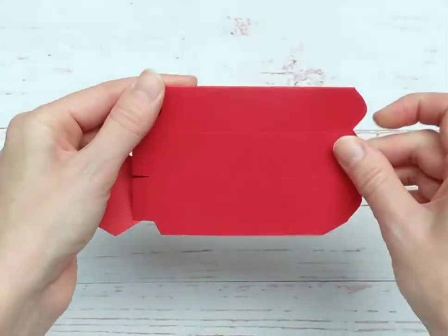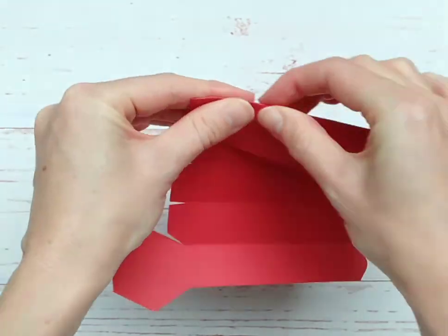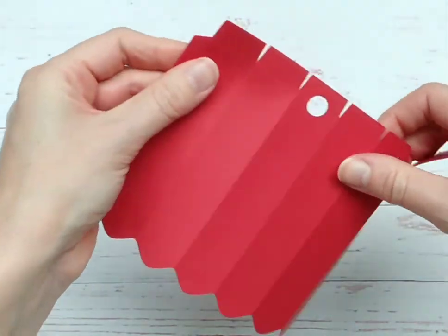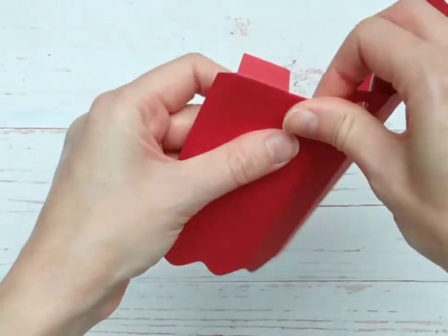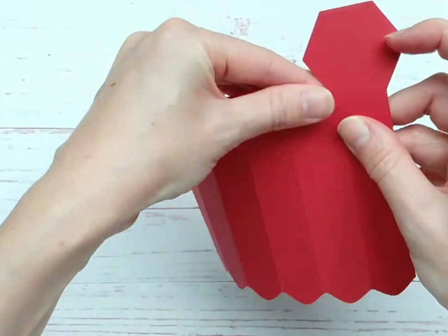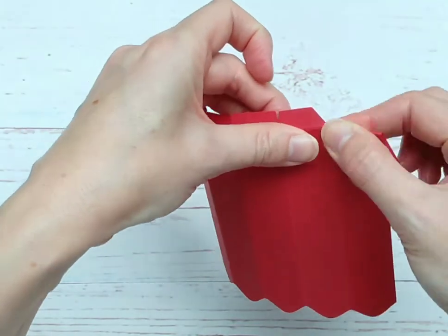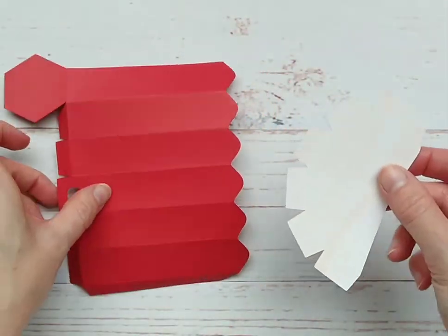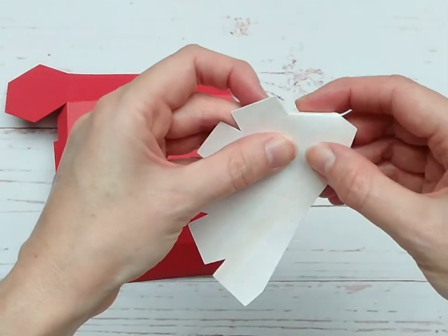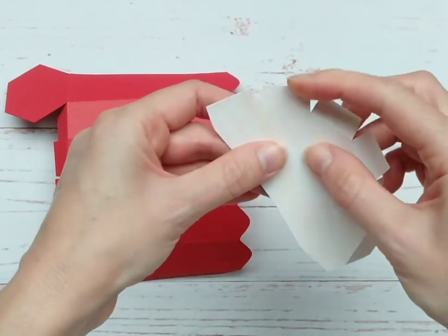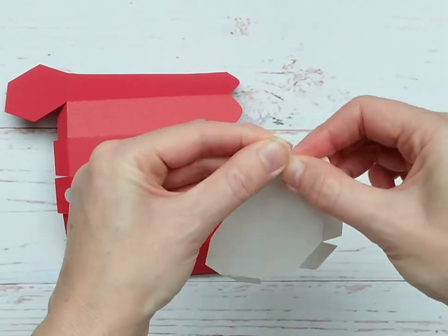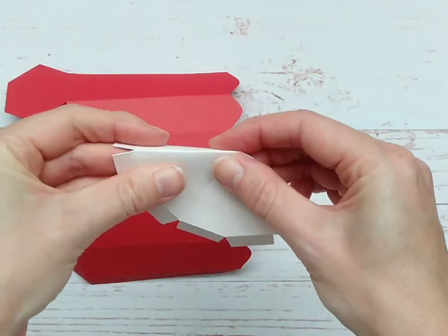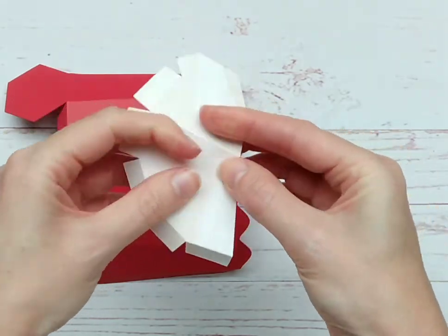So to start with, once you've cut everything out, you need to score and fold down all of those score lines, and the ones along the end there. I'm using 220 GSM card for this box. You can use anything 220 to 250, but I find that works quite well. So just continue to fold all the score lines.